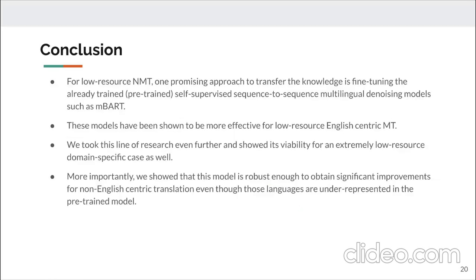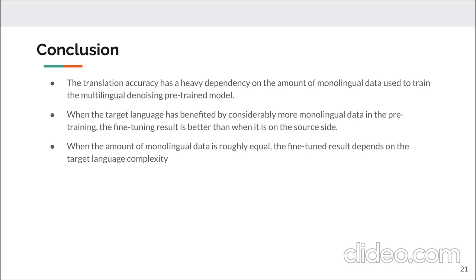In conclusion, for low-resource NMT, one promising approach to transfer knowledge is fine-tuning the already trained multilingual denoising model such as MBART. These models were effective for low-resource English-centric machine translation per previous studies. We took this research further and showed its viability for an extremely low-resource domain-specific case. We showed this model is robust enough to obtain significant improvements for non-English-centric translation even when those languages are underrepresented in the pre-trained model. Translation accuracy heavily depends on the amount of monolingual data used to train the multilingual denoising pre-trained model.